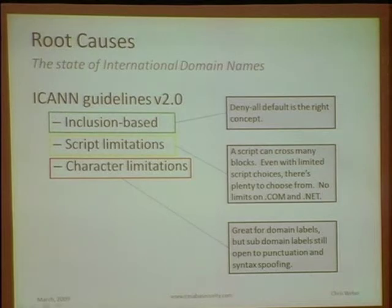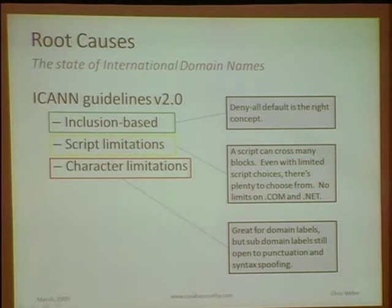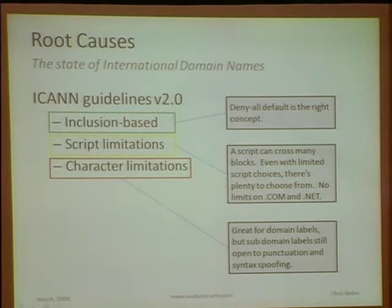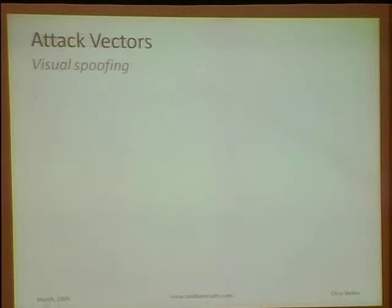Looking more closely at ICANN's guidance: their default deny-all is a good concept. Script limitations say let's limit a top-level domain like .com to certain scripts. But even within a single script, there are still many look-alike characters. The character limitations — prohibiting syntax, punctuation characters in a domain label — are boxed in red because that doesn't buy us much. We can use sub-domain labels for that and fool users all day long. In the end, registrars still allow confusables and mixed scripts, and can't really control syntax spoofing in sub-domains.